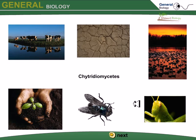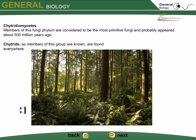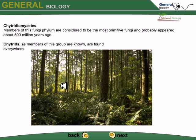In this video I am going to talk about Chytridiomycetes, which produce zoospores. We'll look at the characteristics and importance of Chytridiomycetes. They are members of a fungi phylum, considered to be the most primitive fungi, and probably appeared about 500 million years ago. Members of this group are known as chytrids, and they can be found almost everywhere on planet Earth.